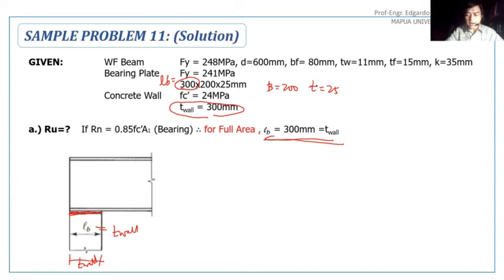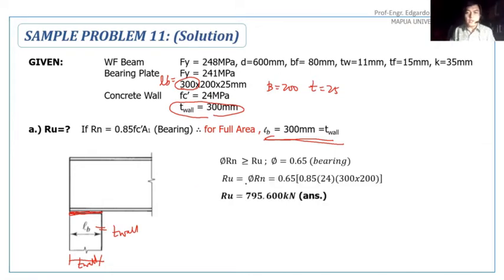For RN, the design strength PRN should be greater than or equal to Ru, where phi is 0.65 for bearing. Just substitute: Ru would be 0.65 times RN, where RN is 0.85 times fc' times LB times B. We got this answer: Ru of 795.6 kN. That would be the ultimate reaction. Actually, for this part of the solution, there's no effect yet of interchanging LB and B. Even if we interchange them, it would give us the same final answer of 795.6 kN.